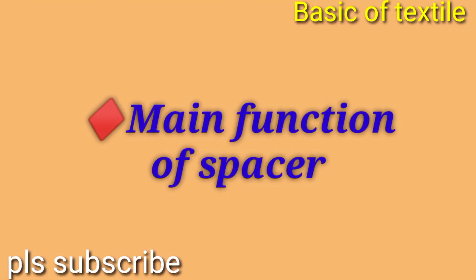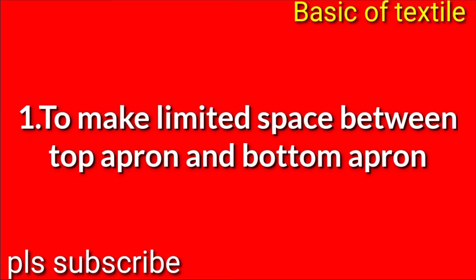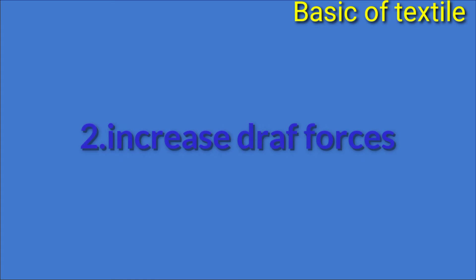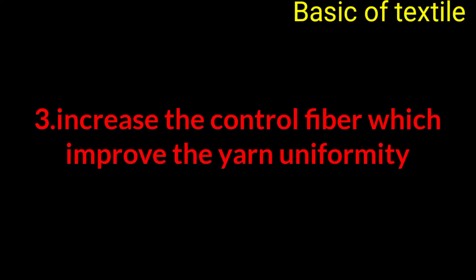The main function of the special apron is: number one, to make limited space between top apron and bottom apron; number two, to increase draft forces; number three, to increase fiber control, which improves yarn uniformity.